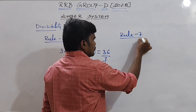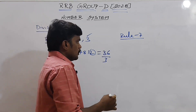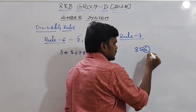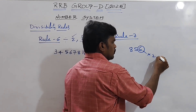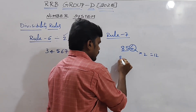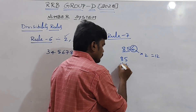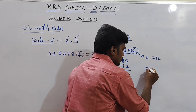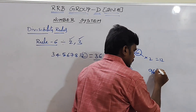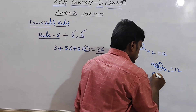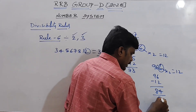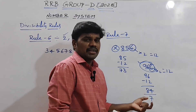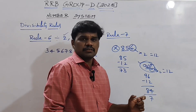Rule number 7: Take 856. The last digit is 6. Multiply it by 2 to get 12. The remaining number is 85. Subtract: 85 minus 12 is 73. Since 73 is not divisible by 7, 856 is not divisible by 7. Try 966: last digit 6, multiply by 2 is 12; 96 minus 12 is 84, and 84 is divisible by 7, so 966 is divisible by 7.